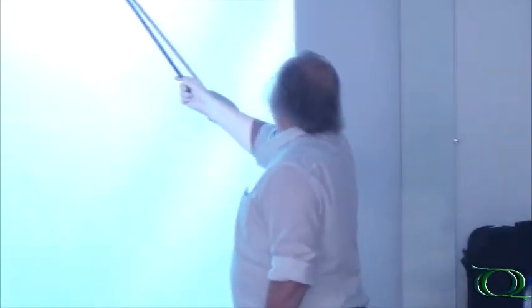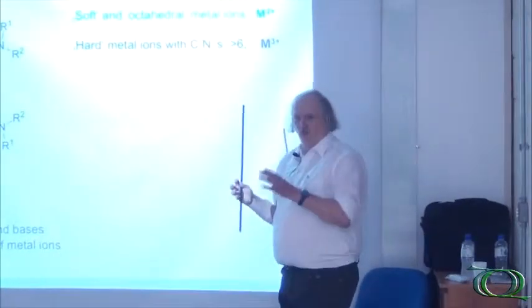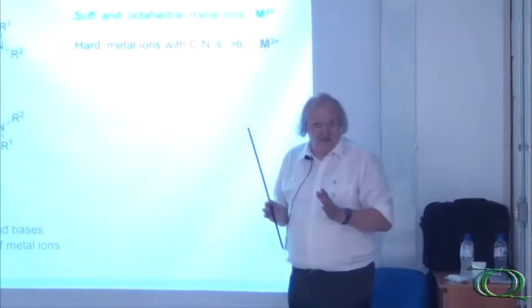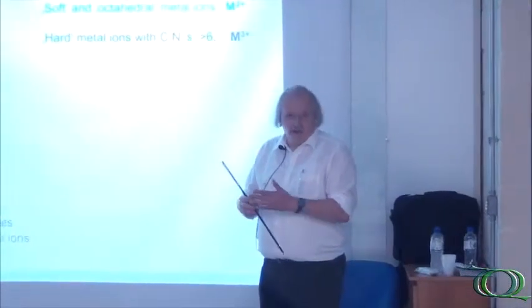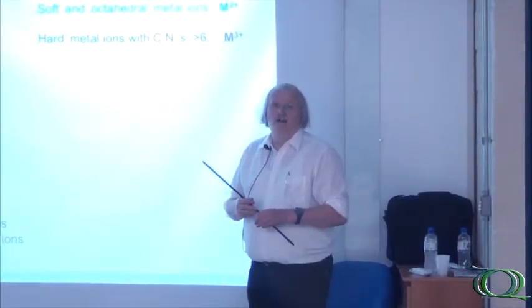So our first reactions, Jacob made these reactions, were started with soft and octahedral or square planar metal ions. Metal ions like nickel two, like palladium square planar, like copper two, like manganese two.